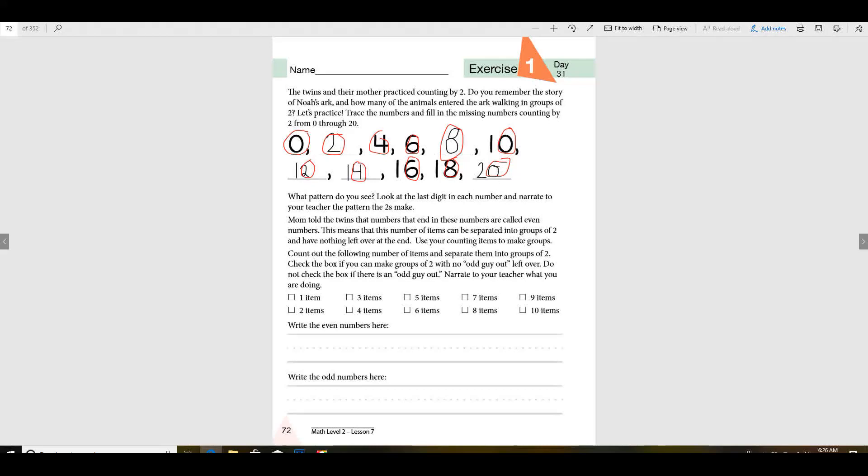Let's say them: zero, two, four, six, eight, and then it starts over zero, two, four, six, eight, zero, and it will keep going. Mom told the twins that numbers that end in these numbers are called even numbers. This means that this number of items can be separated into groups of two and have nothing left over at the end.